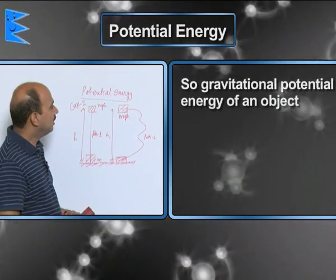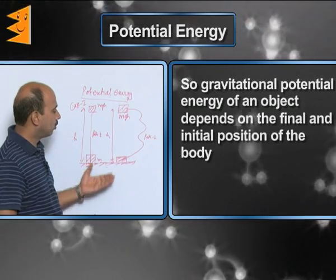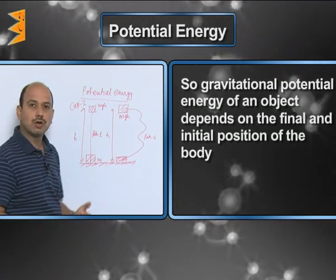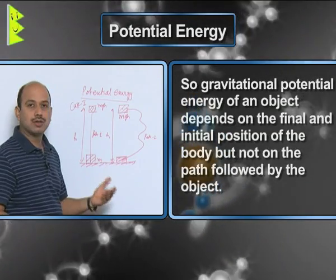So, potential energy, gravitational potential energy of the object, it only depends on the final and initial position of the object. It does not depend on the path followed by the object.